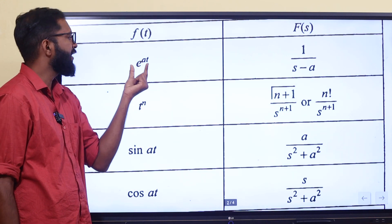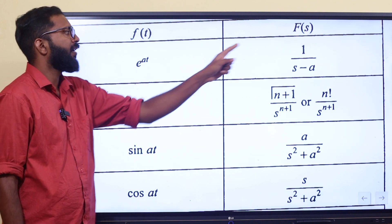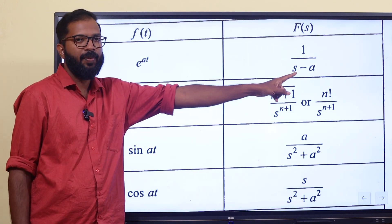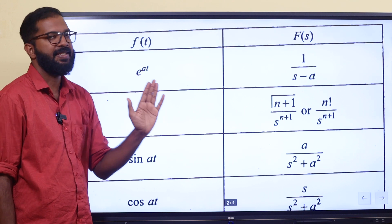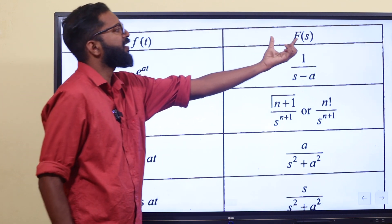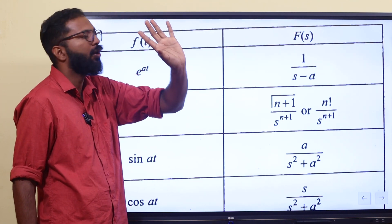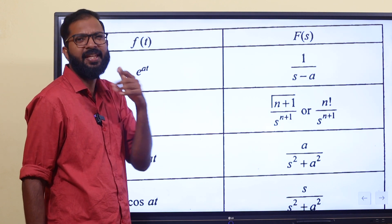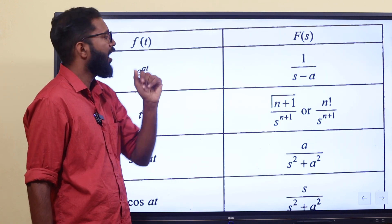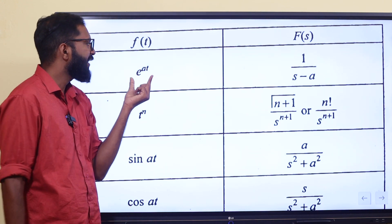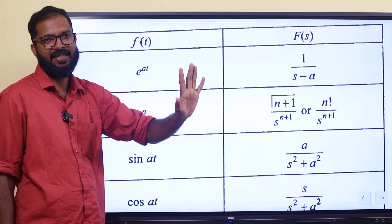Now we are deriving the formula. For the function e raised to at, the Laplace transform is 1 by s minus a. F of s is the Laplace transform in short form. L of f of t is a little bit comfortable because it's like a Fourier transform. For e raised to at, the Laplace transform is 1 by s minus a.